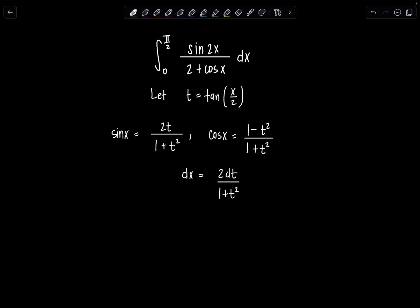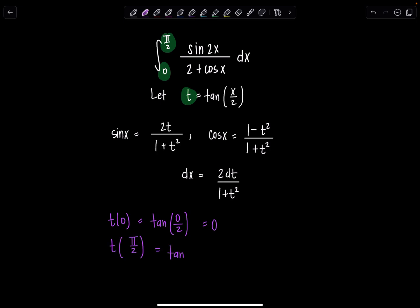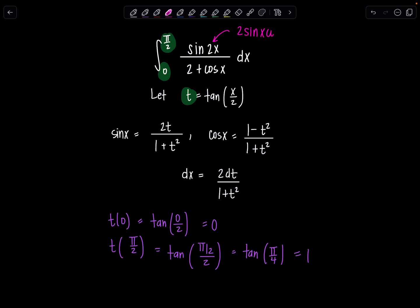Since I want to solve this integral using this substitution, right away I notice I need to use our double angle identity so I can rewrite sine 2x in terms of just sine x and cosine x. I also need to change my limits of integration from x to t. So t of 0 is tangent of 0 over 2, which is 0. And t of pi over 2 is tangent of pi over 4, which is 1. How lovely! And sine 2x is 2 sine x cosine x.